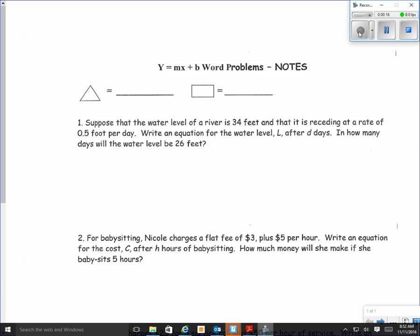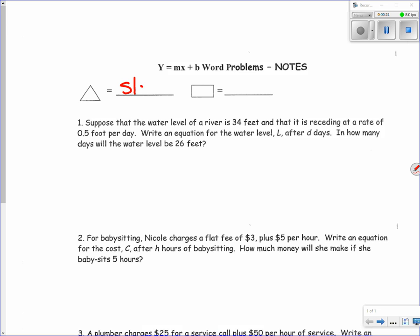So first, we're going to go back to our triangles and squares. The triangle, if you remember from last time we did word problems, means the slope, which is also referred to as m from our equation. And our rectangle is going to be our y-intercept, which in terms of the equation is b.